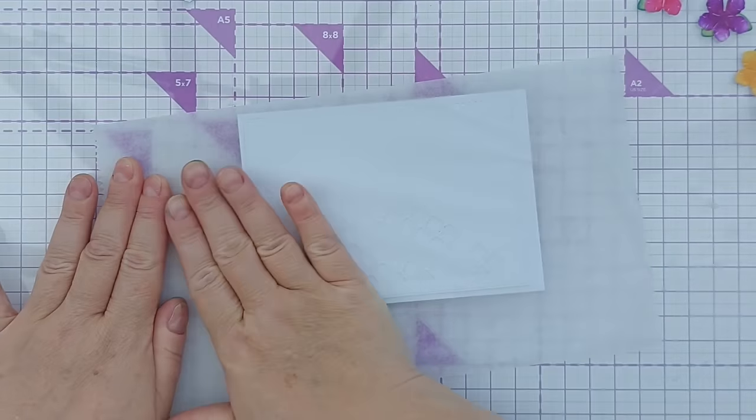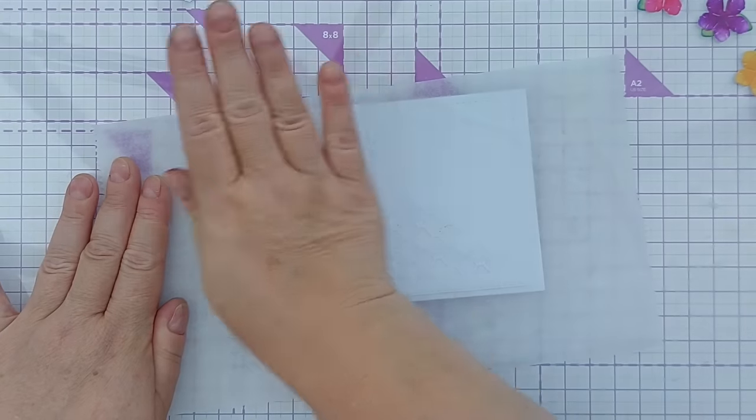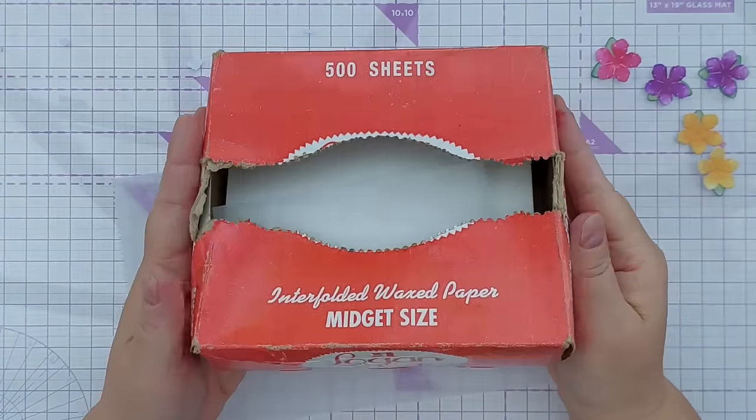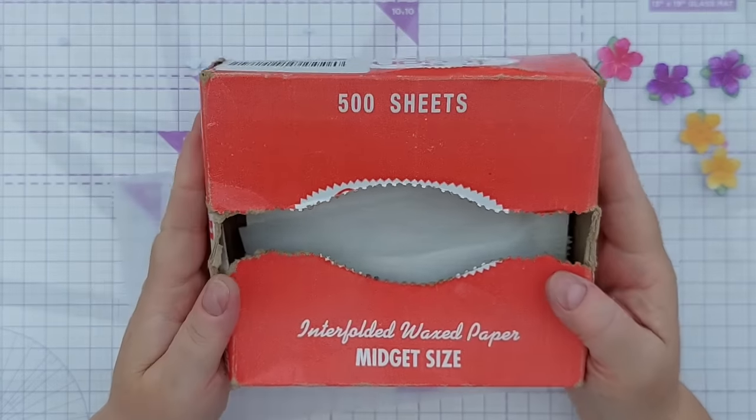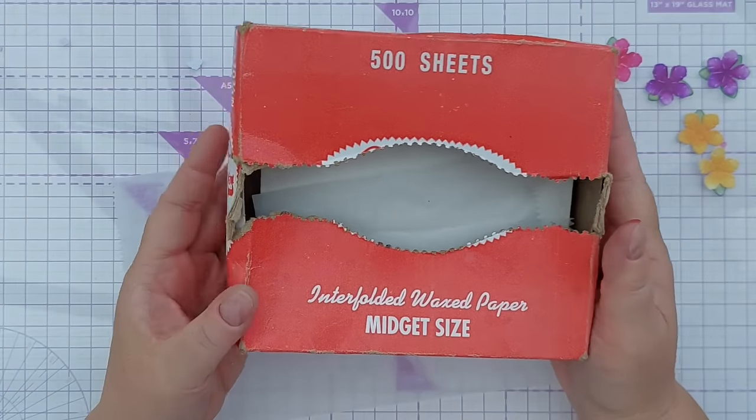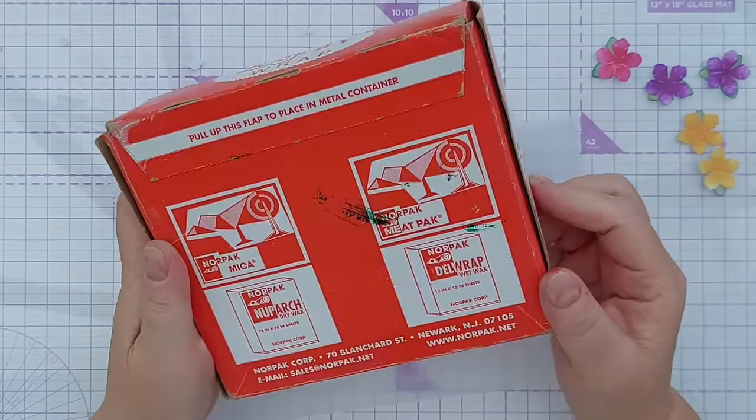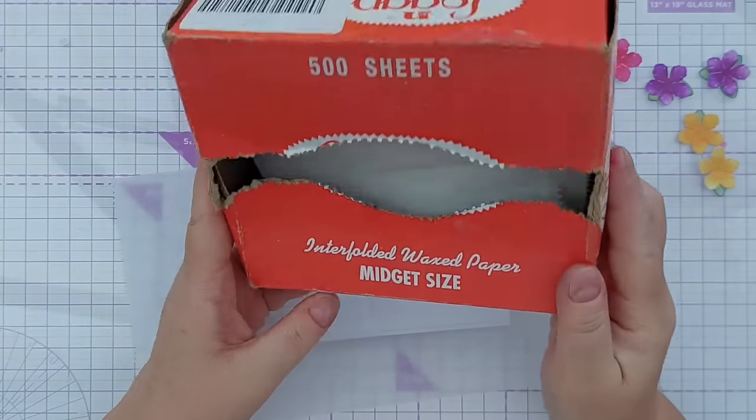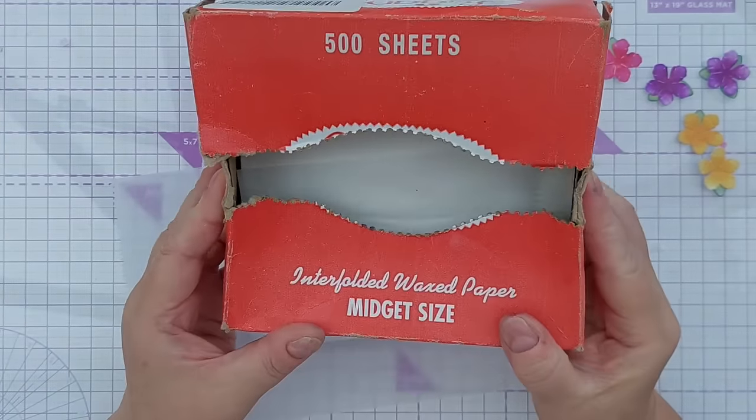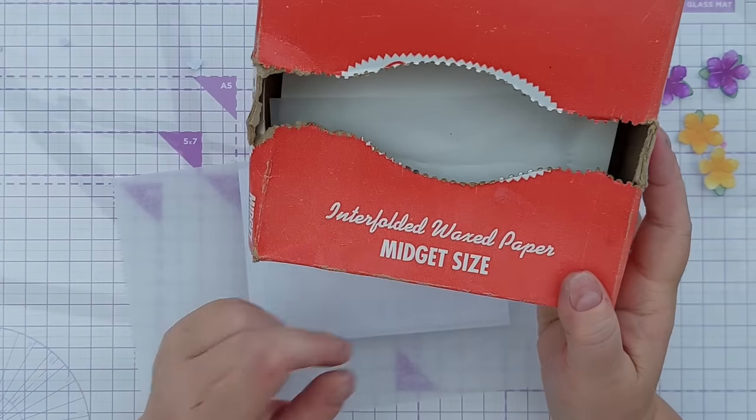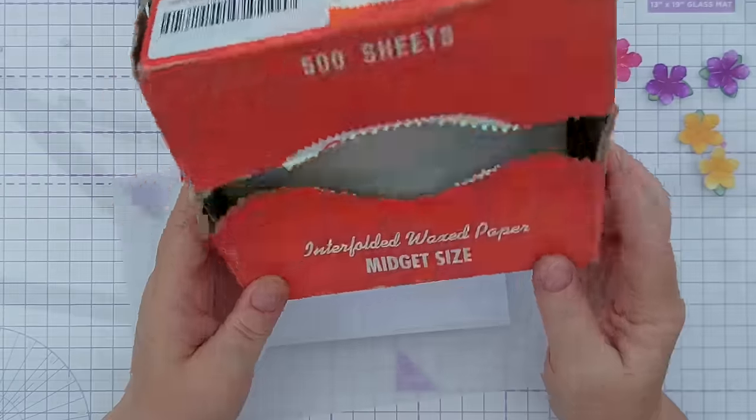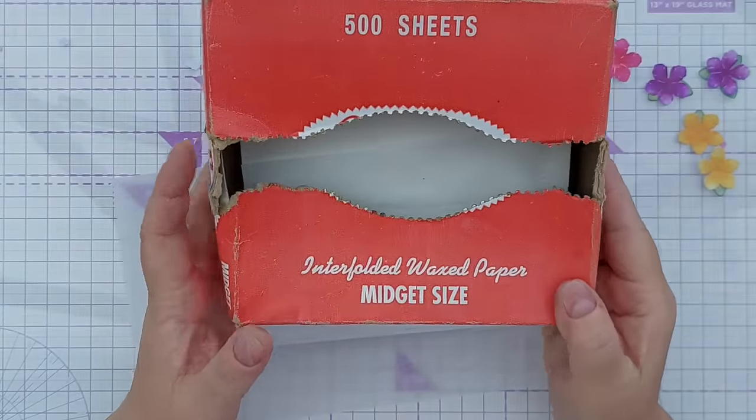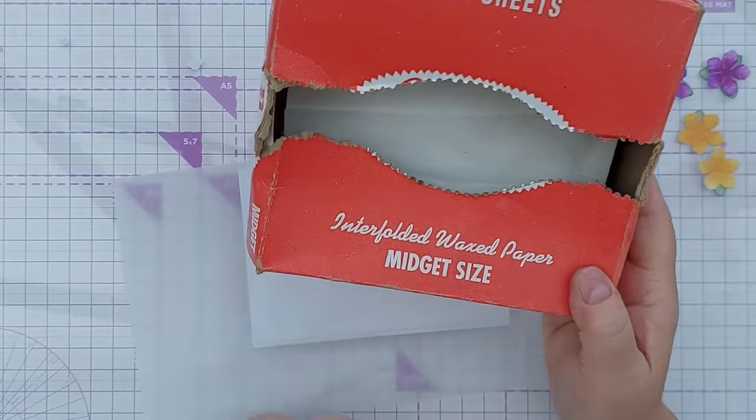I'll press that down with a bit of non-stick deli paper. I often get asked what make this deli paper is. It is Logan Wrap Interfolded Waxed Paper, this is the small size. I have looked it up on Amazon, which is where I bought it from quite a few years ago now as you can tell from the box. I don't think they sell this size anymore, but you can find the larger size. You could always cut some sheets down if you don't need them that size.